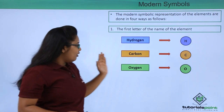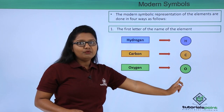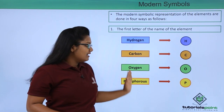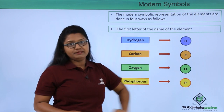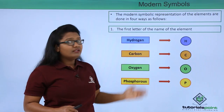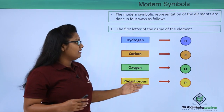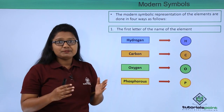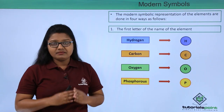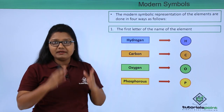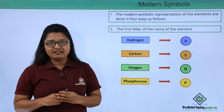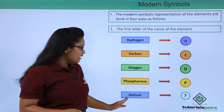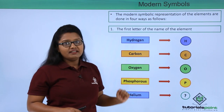An oxygen atom is represented by capital O, the first letter of oxygen, and phosphorus is given the symbol capital P. However, we cannot represent all 118 elements this way, because there are only 26 alphabets but 118 elements, making repetitions inevitable. For example, helium cannot be represented by capital H since hydrogen has already been allotted that letter.